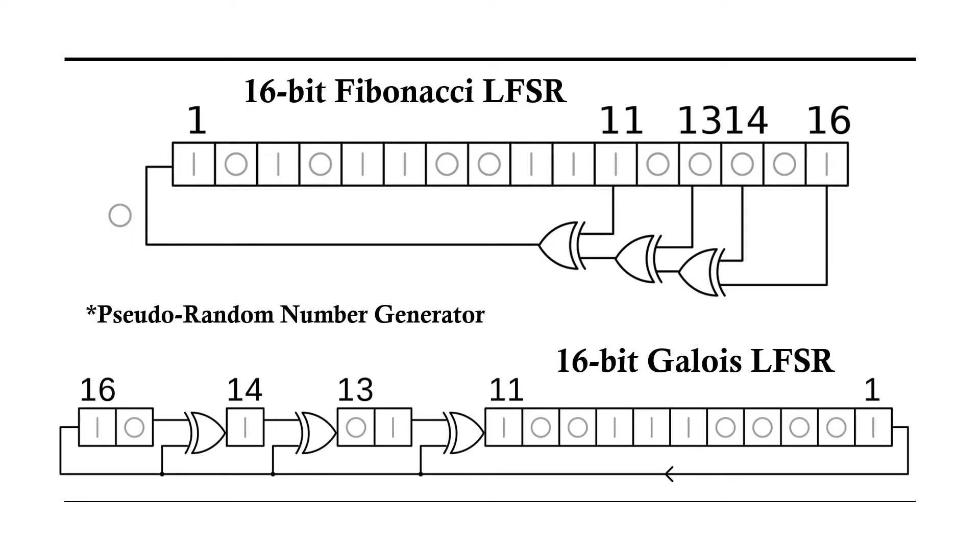There's two different types: there's the Fibonacci and there's the Galois. You can see the difference here - how the XORs, the logic coming back to the first bit is XORed. And then for the Galois, you have the XOR for the feedback coming in from the previous to shift to the next one.